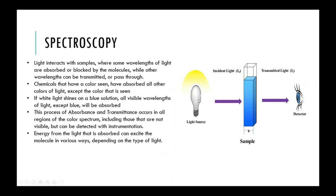Spectroscopy is when light interacts directly with chemicals, either in chemical solutions or objects. Light itself is typically white light — light coming from the sun — and this consists of all different wavelengths. In spectroscopy, typically a single wavelength or a single energy of light is selected and it's observed how the chemical will interact with that particular type of energy light source.